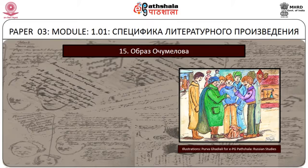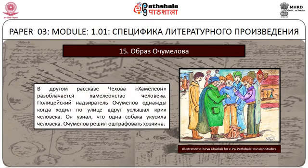В другом рассказе Чехова «Хамелеон» разоблачается хамелеонство человека. Полицейский надзиратель Очумелов однажды, когда ходил по улице, вдруг услышал крик человека. Он узнал, что одна собака укусила человека, и решил оштрафовать хозяина.